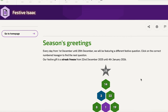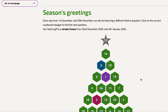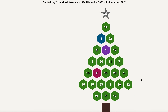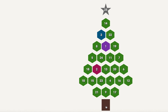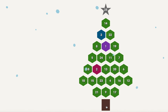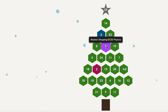Here at Isaac Science we've created our own advent calendar. Behind each door a science or maths question for you to enjoy. Behind each bauble you will find maths, physics, chemistry and biology questions, and the colour of the bauble will give you a hint as to what you're about to explore.